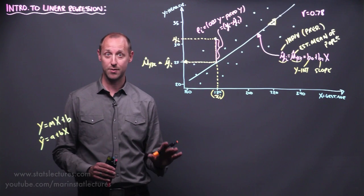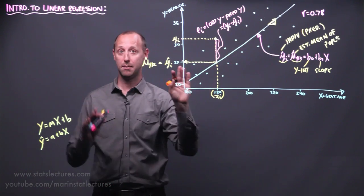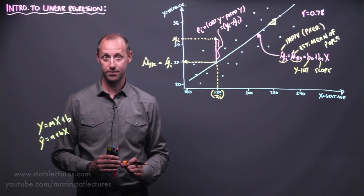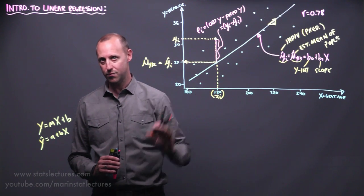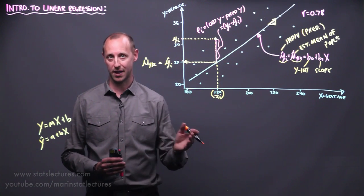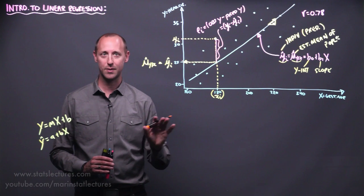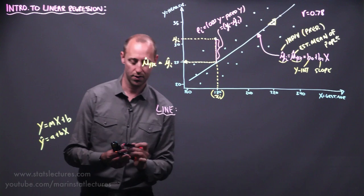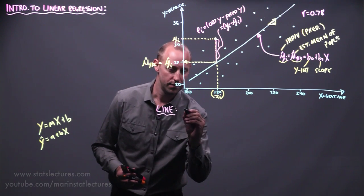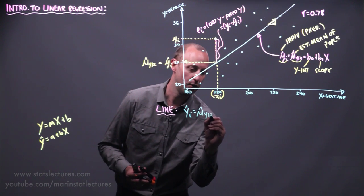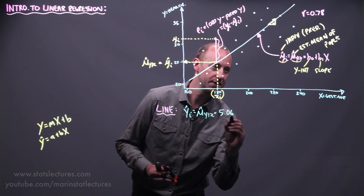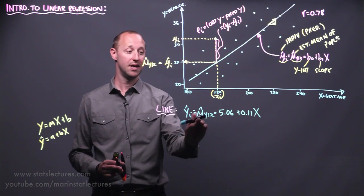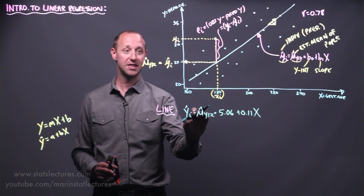A separate topic — how we choose the best line — should be explored later. The quick version: we use something called the method of least squares, where we try to minimize the sum of squared error. This ends up being the same as using a method of maximum likelihood. For now, let's suppose the equation for the line comes out to be yi-hat equals 5.06 plus 0.11 times x — so 0.11 times the gestational age plus 5.06 gives us the predicted head circumference, or the estimated mean for that value of x.